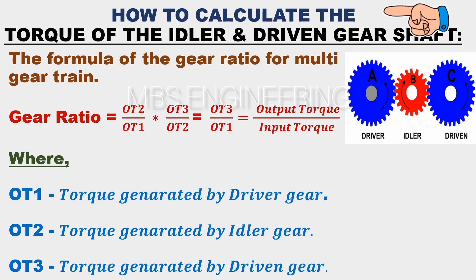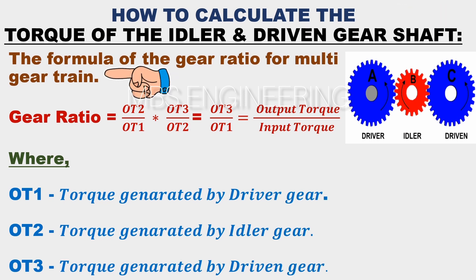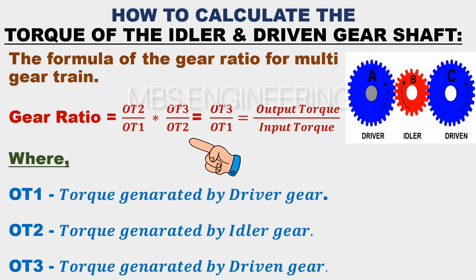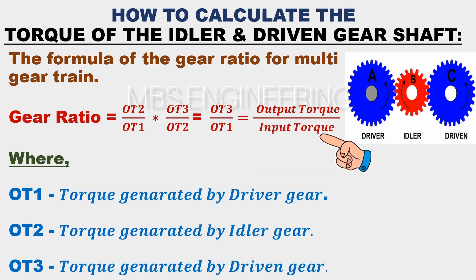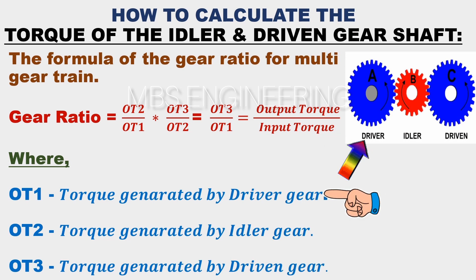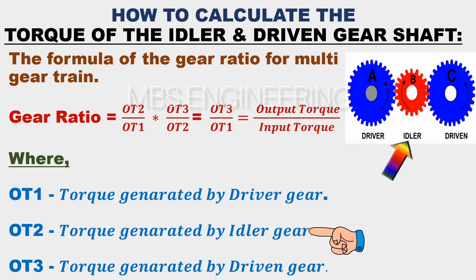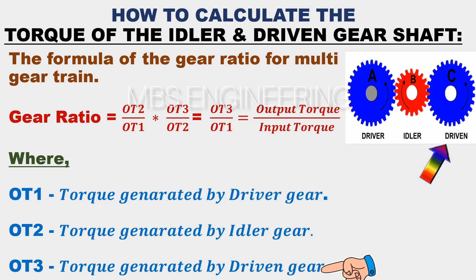How to calculate the torque of the idler and driven gear shaft. The gear ratio equals OT2 divided by OT1, and that obtained value multiplied by OT3 divided by OT2. So the gear ratio equals OT3 divided by OT1, which equals the output torque divided by the input torque. OT1 is the torque generated by the driver gear, OT2 is the torque generated by the idler gear, and OT3 is the torque generated by the driven gear.